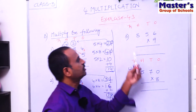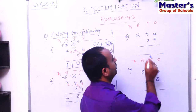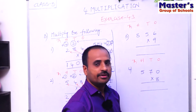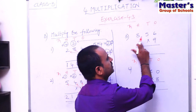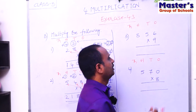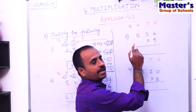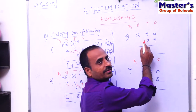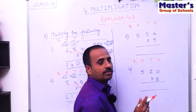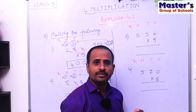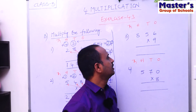Now see the third problem. The given three-digit number is 856, and 9 is the single-digit number. We have to multiply 856 with 9. You should know the ninth table thoroughly to do this multiplication easily.